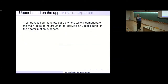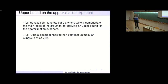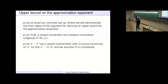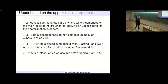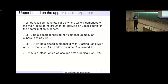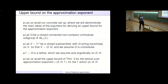We want to talk about the upper bound on the approximation exponent. Let's start by recalling the concrete setup where we will demonstrate the main idea for deriving an upper bound. G is a closed connected non-compact unimodular subgroup of SL_N. V in R^N is a closed submanifold with G acting transitively on V, so that we can identify V with a homogeneous space G mod H. We assume H is unimodular, so V has an infinite invariant measure. Gamma is a lattice which we assume acts ergodically on G mod H. By Moore's theorem, this is a very weak condition satisfied essentially in any interesting case.